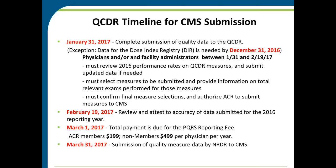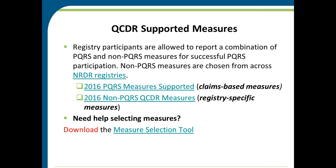Regarding payment: the total cost for participating in the QCDR includes a PQRS reporting fee of $199 for ACR members and $499 for non-ACR members. That is a one-time annual reporting fee, per physician per year. If you report for multiple TINs you will not be charged more than once. Our goal is to submit all your complete data to CMS by March 31st, 2017. These deadlines are firm.